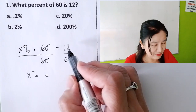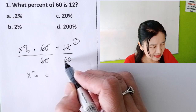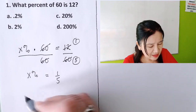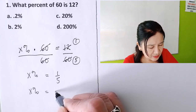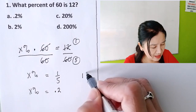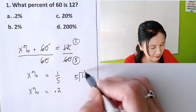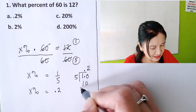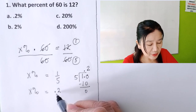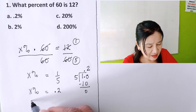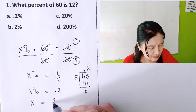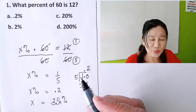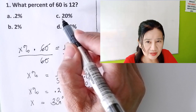Cancel 60; you will be left with x percent equals 12 over 60. 60 is divisible by 12, so simplify: 12 divided by 12 is 1, 60 divided by 12 is 5, so that is one-fifth. One-fifth is 0.2 — one divided by 5 is 0.2. But this is x percent, therefore x is simply 20. Move the decimal point two places to the right. The answer is 20, that is letter C.